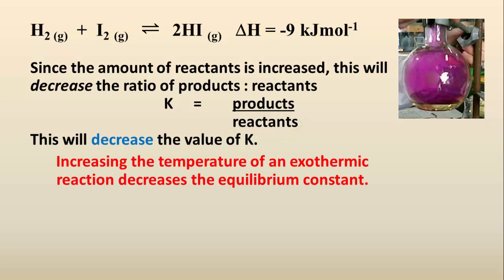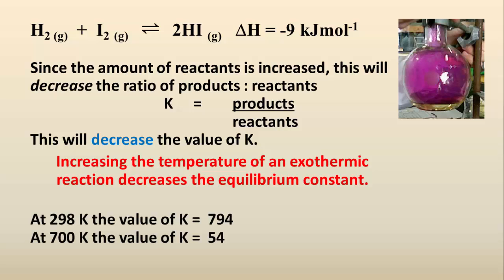So increasing the temperature of an exothermic reaction will decrease the value of the equilibrium constant. This can be seen with the changes in this equilibrium. Increasing the temperature from 298 Kelvin to 700 Kelvin overall decreases the value of the equilibrium constant. This shows that the concentration of reactants has increased. The equilibrium constant changes with the temperature, so the temperature therefore must be quoted with the value of K.